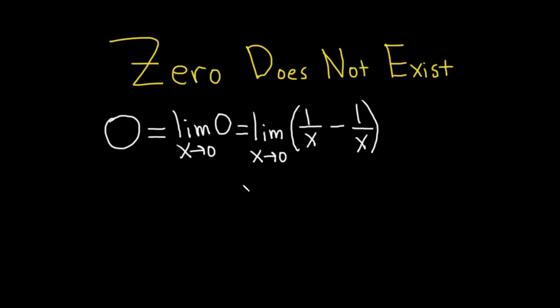And the next step, we're going to break this up into two separate limits. So we have the limit as x approaches zero of 1/x, and then minus, so we're going to bring down the minus, and then we have another limit.